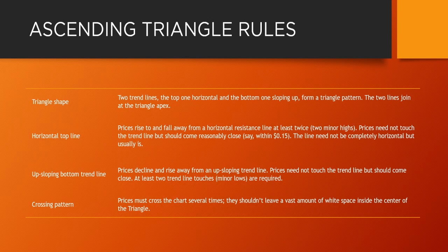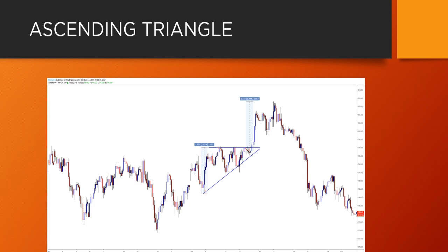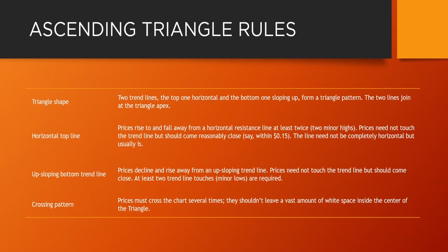The price must also cross the chart several times — you don't want to have an empty triangle. For example, we don't want to see something that looks pretty empty inside. It's much better when the price fills the whole triangle, ideally with one more leg to the downside. We don't want to see huge empty areas inside the triangle. Those are the rules for the ascending triangle.